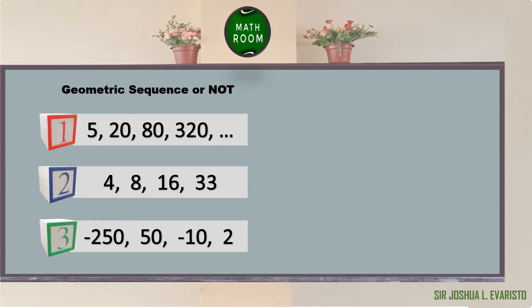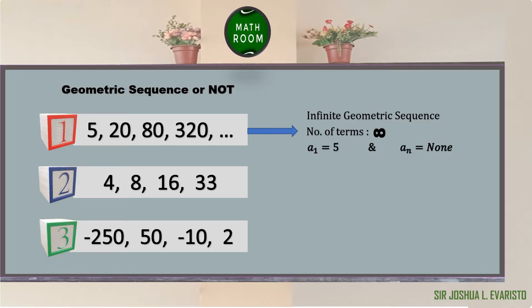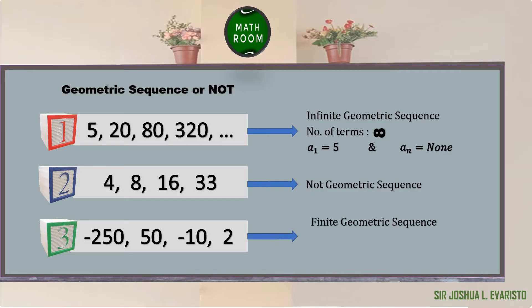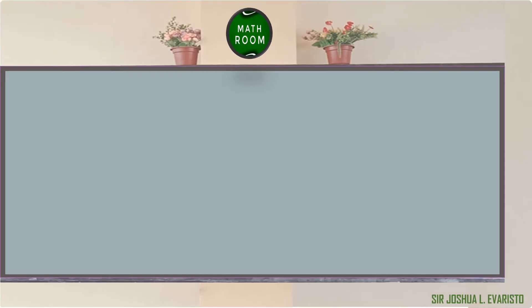To summarize: Example 1 — 5, 20, 80, 320, and the pattern continues — is an infinite geometric sequence with infinitely many terms; the first term is 5 and there is no last term. Example 2 — 4, 8, 16, 48 — is not a geometric sequence since there is no common ratio. Example 3 — -250, 50, -10, 2 — is a finite geometric sequence with 4 terms; the first term is -250 and the last term is 2.